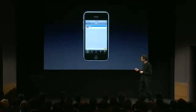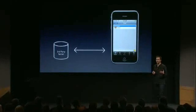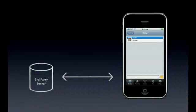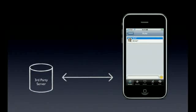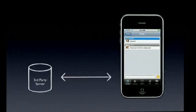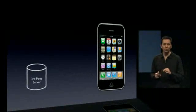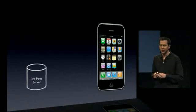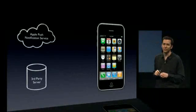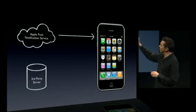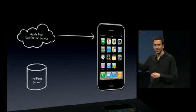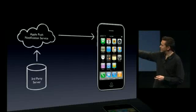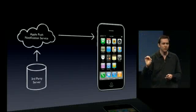Here's how it works. Let's say you have an instant messaging application. While it's running, it's connected to your server, so if you want to send a notification, just talk right to your application. But when you quit the application, you no longer have this connection open. That's where the Apple Push Notification Service comes into play — it has a persistent connection open to the phone, and this third-party server just passes its notifications through the Apple Push Notification server.